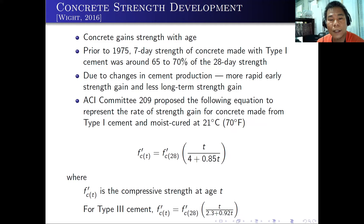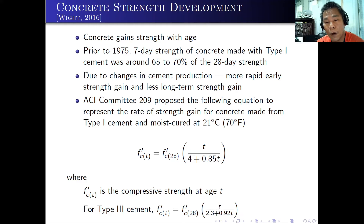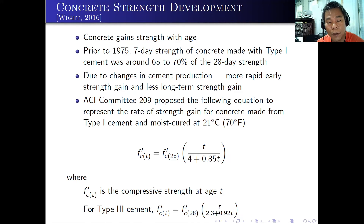ACI Committee 209 proposed the following equation to represent the rate of strength gain for concrete made from Type I cement and moist cured at 21 degrees Celsius. The formula is that FC prime at any time T is equal to FC prime at 28 days times T over (4 + 0.85T), where T is the age of the concrete in days. For Type III cement, you can also use a similar formula but with a denominator of 2.3 + 0.92T.